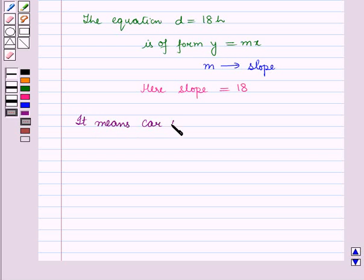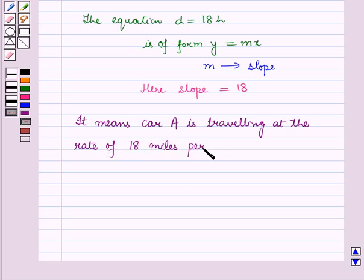It means car A is travelling at the rate of 18 miles per hour.